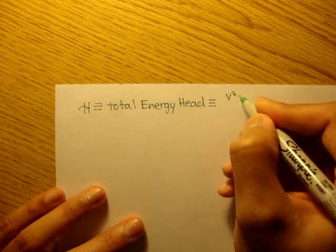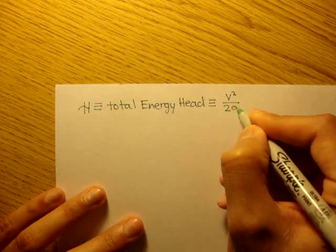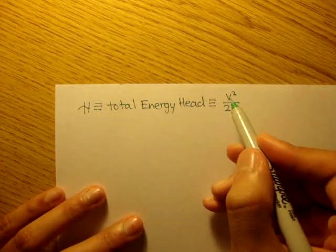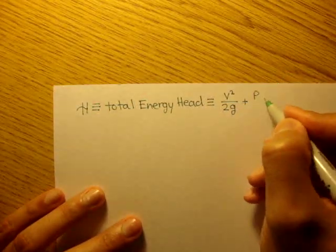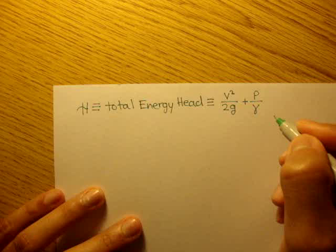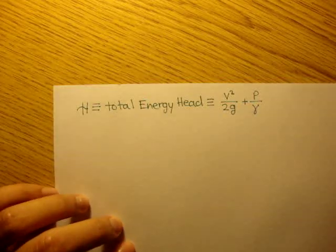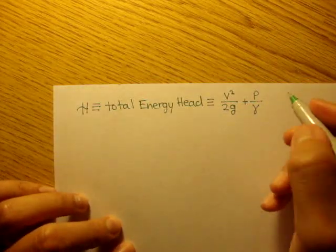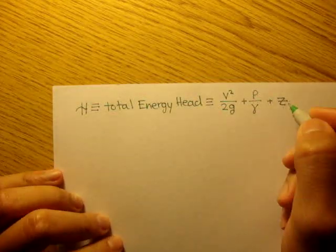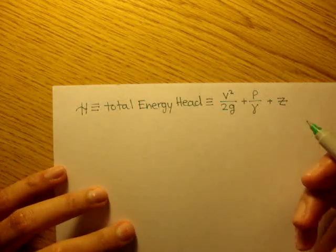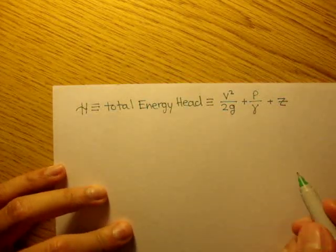It's defined to be v squared over 2 times gravity, so velocity squared over 2 times gravity, plus pressure over gamma, which is a specific weight, plus z. And z is just an altitude or a height, a measure of height or altitude.